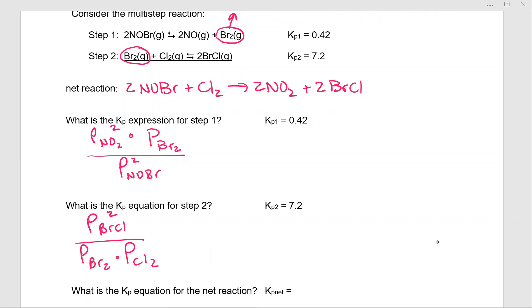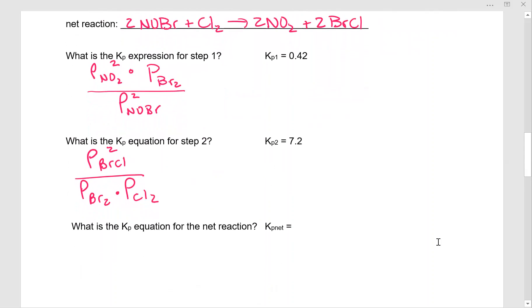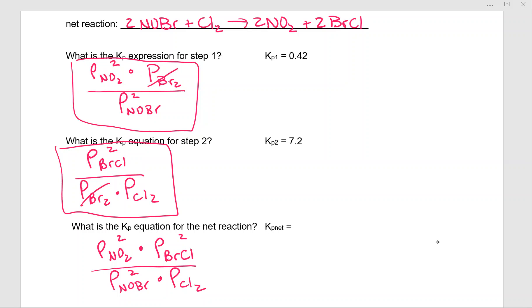Now if we were to put these two together, we would find that they would give us Kp for the net reaction. We're going to write Kp based on that reaction at the top. So we have Kp NO2 squared times the partial pressure of bromine monochloride squared over the partial pressure of NOBr squared times the partial pressure of chlorine gas. So this is actually these two multiplied together with the bromine canceling out.